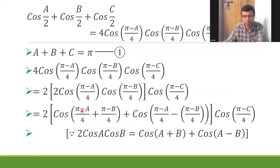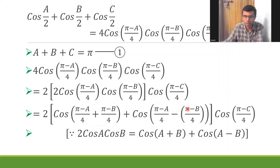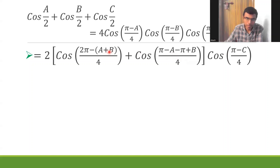The denominators are both 4, so the first argument becomes (2π − A − B)/4, which is (2π − (A+B))/4. For the second argument, multiplying out the minus sign gives (−π + B)/4 inside, i.e., (B − A − π + π ... ) — carefully distributing the negative to both terms inside the bracket.